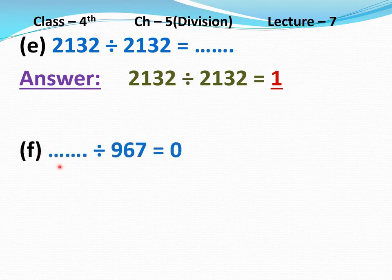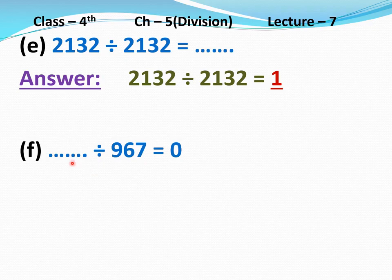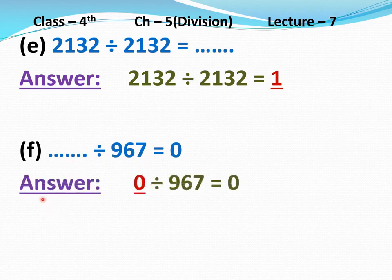Part F: dash divided 967 equal to 0. The quotient is 0, so you will write 0 here. Answer: 0 divided 967 equal to 0.